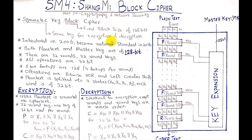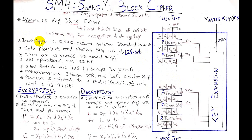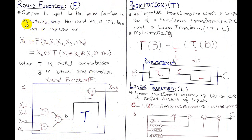At this point you should understand what SM4 block cipher is and how encryption and decryption is performed using the round function. The round function is the remaining thing to understand, along with how key expansion is performed. The reverse step has already been explained, so let's move to the round function F and the key expansion.